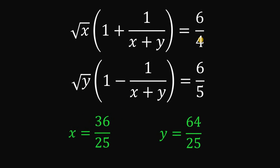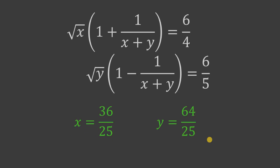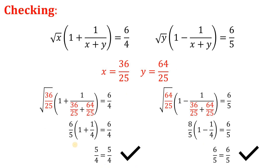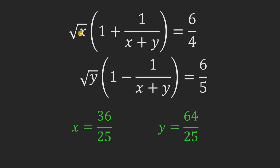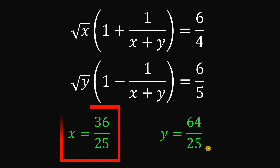Therefore, given these two equations — square root of x times (1 plus 1 over (x plus y)) equals 6 over 4, and square root of y times (1 minus 1 over (x plus y)) equals 6 over 5 — the values of x and y that satisfy them are x equals 36 over 25 and y equals 64 over 25. Checking confirms the first equation gives 6 over 4 and the second gives 6 over 5. We are done.